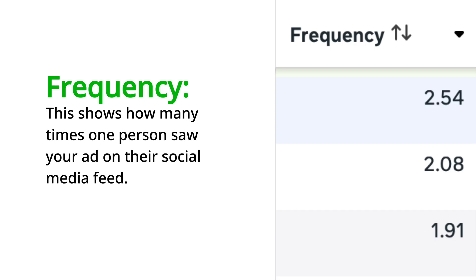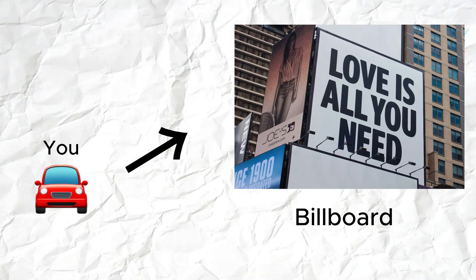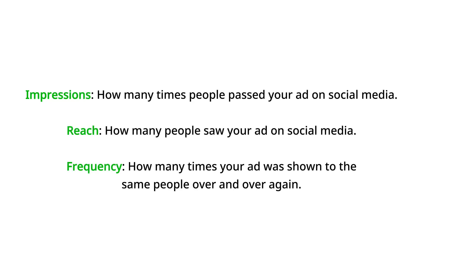The next one I find very interesting is frequency. Frequency is pretty much how many times somebody saw your ad. Remember the billboard? If impressions is somebody passing the billboard and reach is when somebody looks at the billboard, then frequency is how many times did that person look at the billboard while passing it. Impressions — they are passing it. Reach — they looked at it. Frequency — how many times did they look at it?